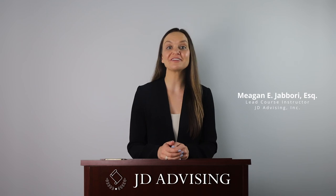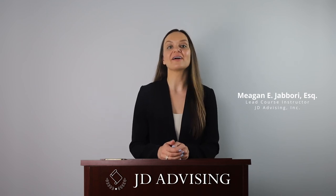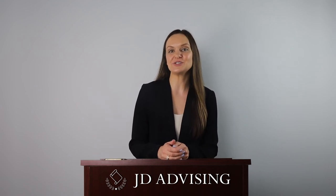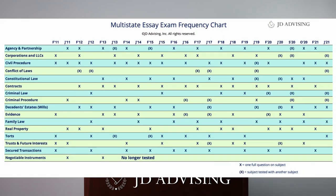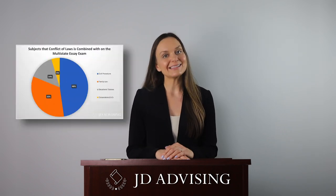In this video, we're going to be covering Conflict of Laws for our MEE Highly Tested Issues Guide. First, let's talk about frequency. Conflict of Laws is the least frequently tested topic on the MEE. Additionally, something that's unique about the subject of Conflict of Laws is that it's not a standalone subject. The National Conference of Bar Examiners, the people who write your exam, have explicitly stated that Conflict of Laws will not be tested by itself. This means that whenever you see a Conflict of Laws issue, it's going to be tested with another subject.